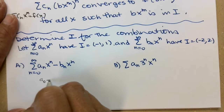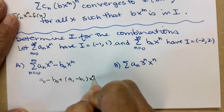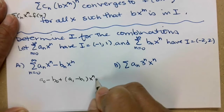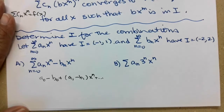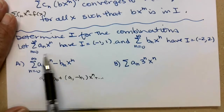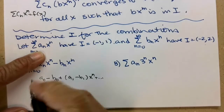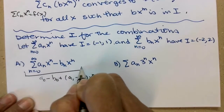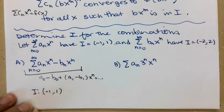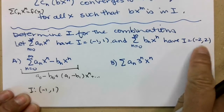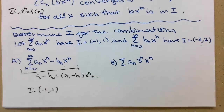You'd have a sub 0 minus b sub 0, plus a1 minus b1 times x to the n, et cetera. The interval of convergence is only valid for the smallest interval that either a or b converges on, and that would be negative 1 to 1. Even though b converges on a bigger interval, a doesn't converge there, so a would be going crazy and pulling b along with it.